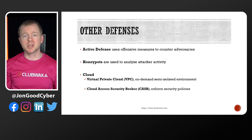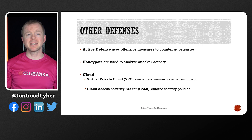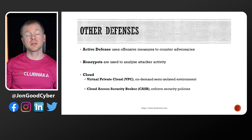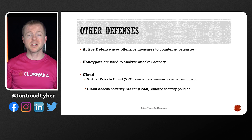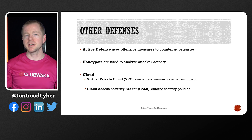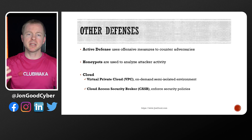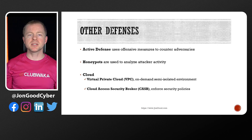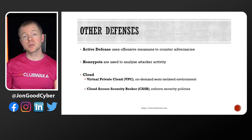Depending on your cloud deployment, your security responsibilities might vary. With Software as a Service and Platform as a Service vendors, much of your security may be covered by contracts and requires you to rely on the vendor. Infrastructure as a Service in cloud environments like AWS and Azure gives you, the customer, more control to implement traditional security controls. A few services worth researching are Virtual Private Cloud, or VPC — basically an on-demand semi-isolated environment in the cloud — and Cloud Access Security Broker, or CASB, tools, which enforce security policies when cloud resources and services are used.